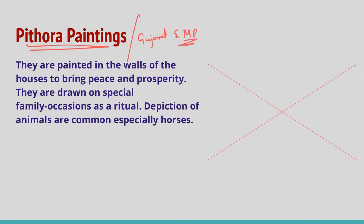Pithora paintings are done by some tribal communities of Gujarat and Madhya Pradesh. These paintings are painted on the walls of houses to bring peace and prosperity. They are drawn on special family occasions as a ritual, and the depiction of animals is common, especially horses.